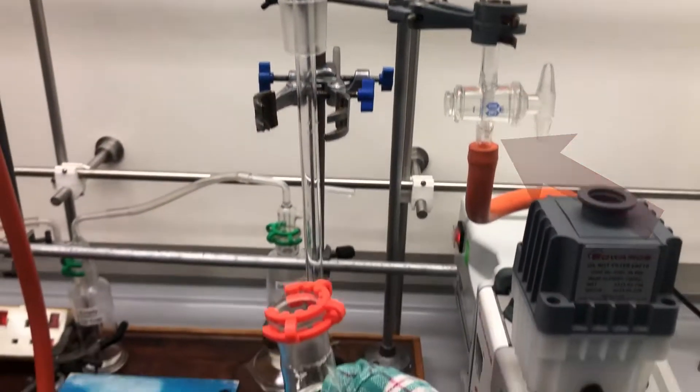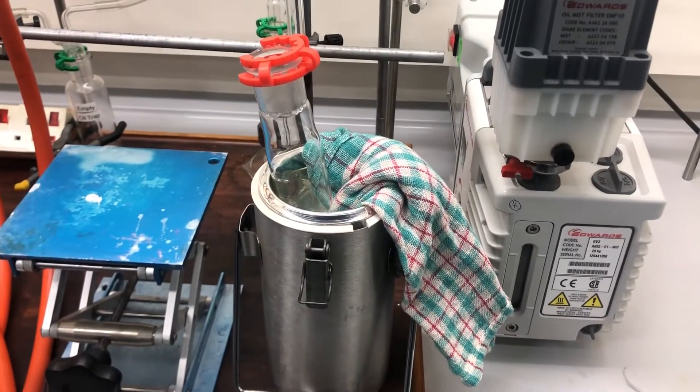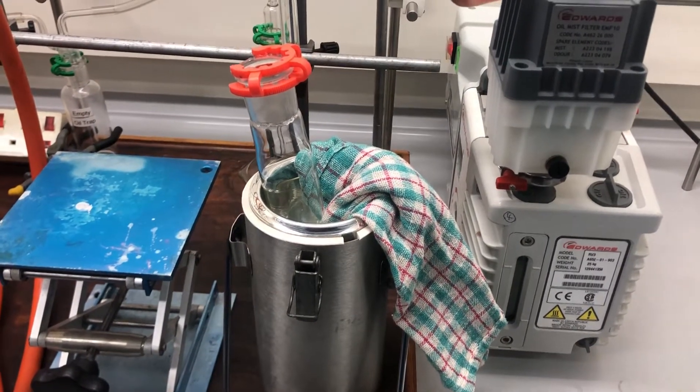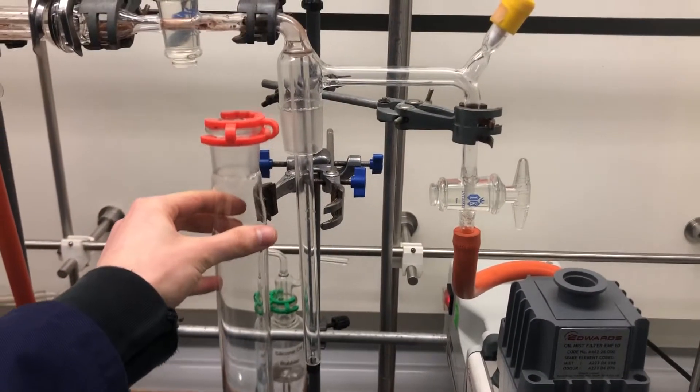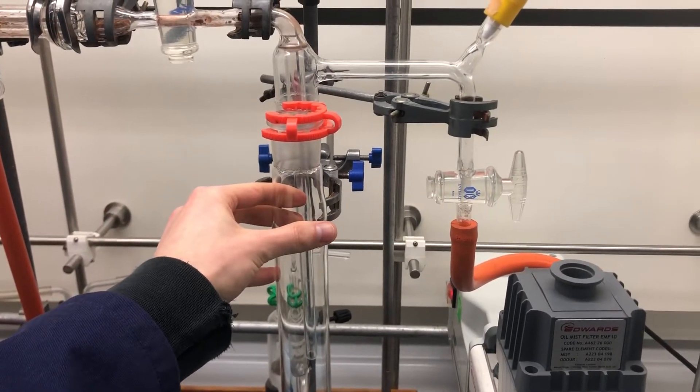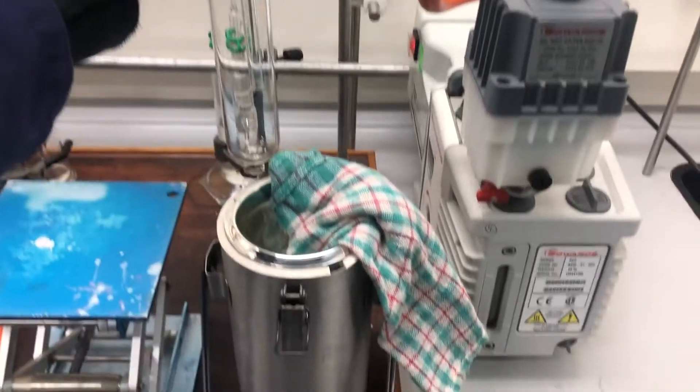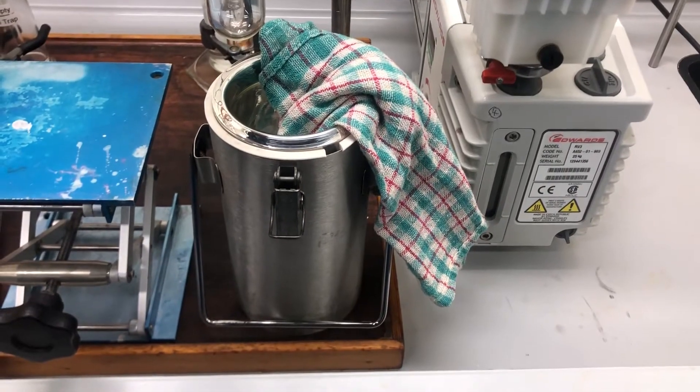We have a solvent trap with a liquid nitrogen dewar that is placed around it. That cools all the gases that come off of our system, pulled off by the pump, and it condenses into that solvent trap there, preventing any gases going into the pump and condensing in there, which can damage it.